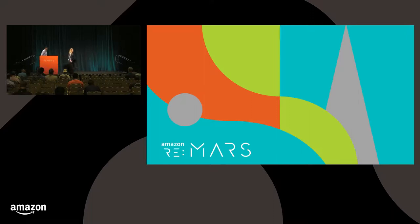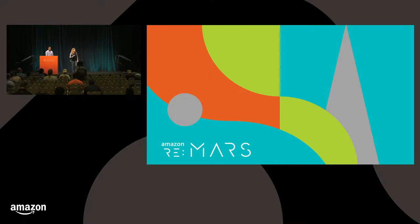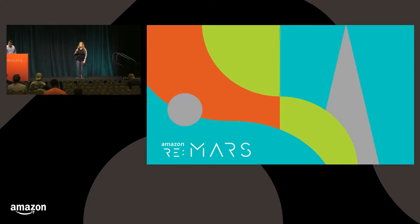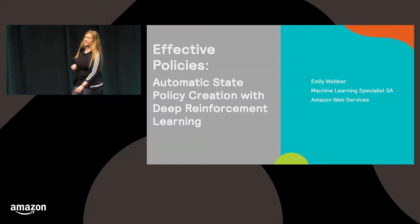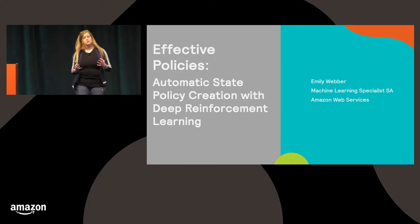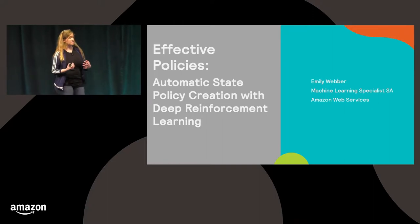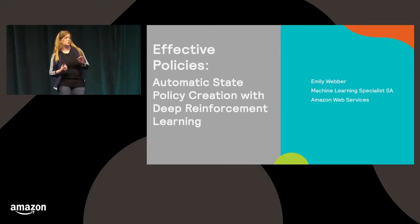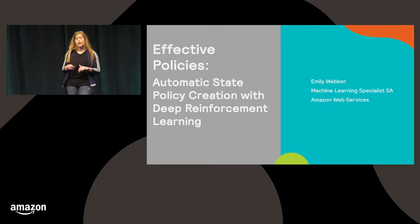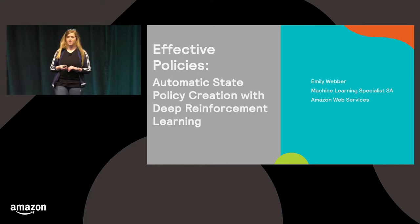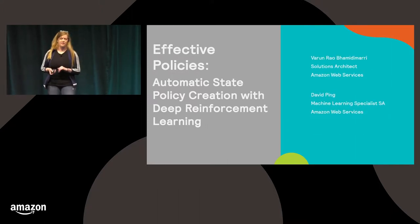Good morning and welcome. If you've ever wanted your public policy decisions to be optimized by artificial intelligence, driven by historical economic data personalized to your specific preferences, and made transparent and highly collaborative, then this is the session for you. My name is Emily Weber. I'm a machine learning specialist at Amazon Web Services, and our session is called Effective Policies.